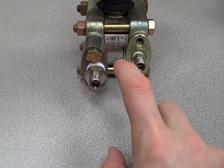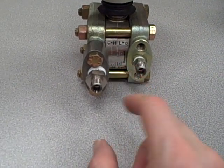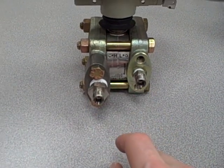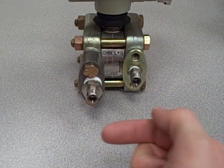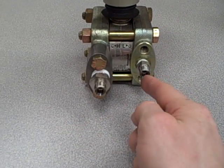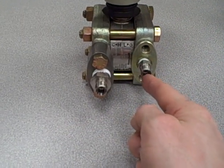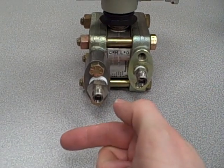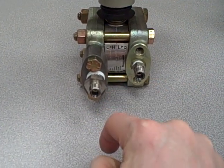Conversely, if we take that same concentric orifice, square-edge, symmetrical in both directions, connected to the same transmitter, and now we pass the fluid flow from the right-hand side to the left-hand side, now the low-pressure port will be at a greater pressure than the high-pressure port, and a flow in that direction will drive the milliamp signal down.